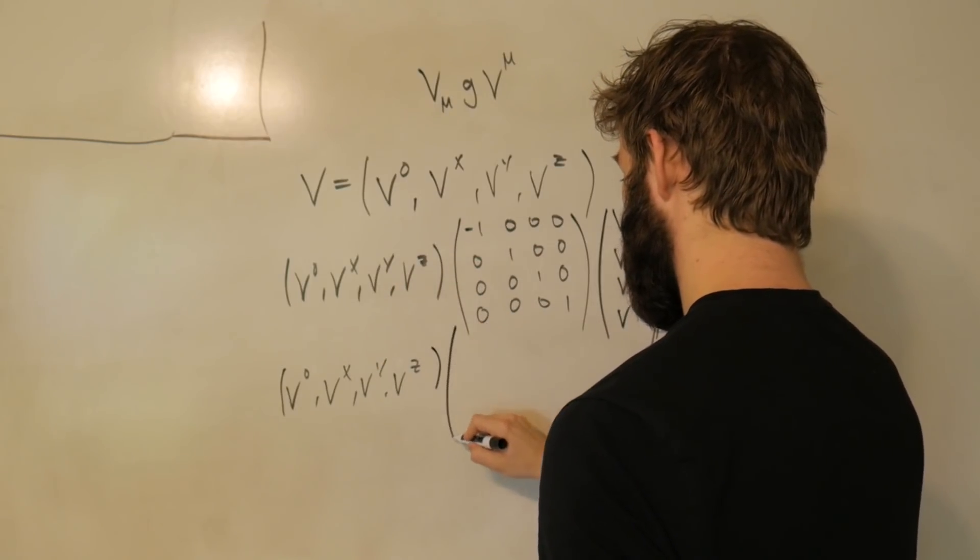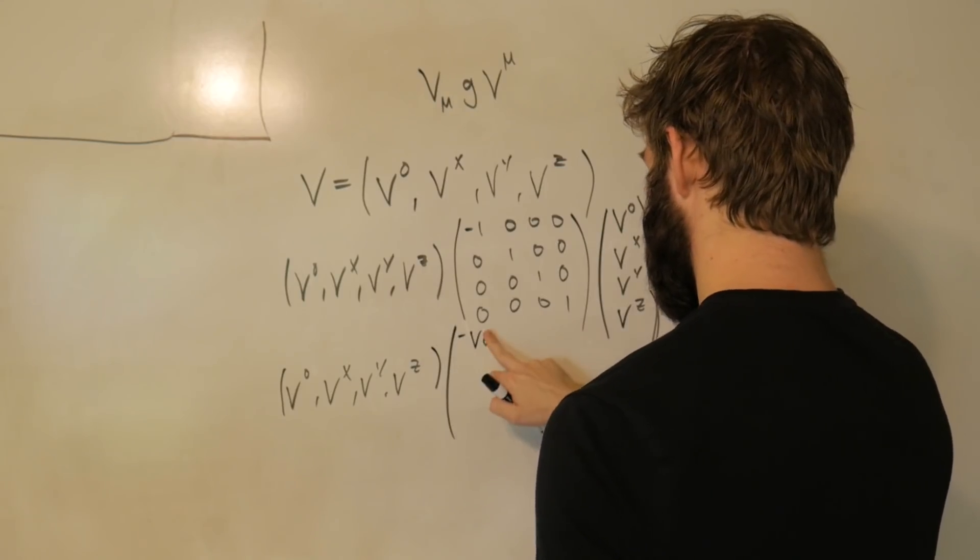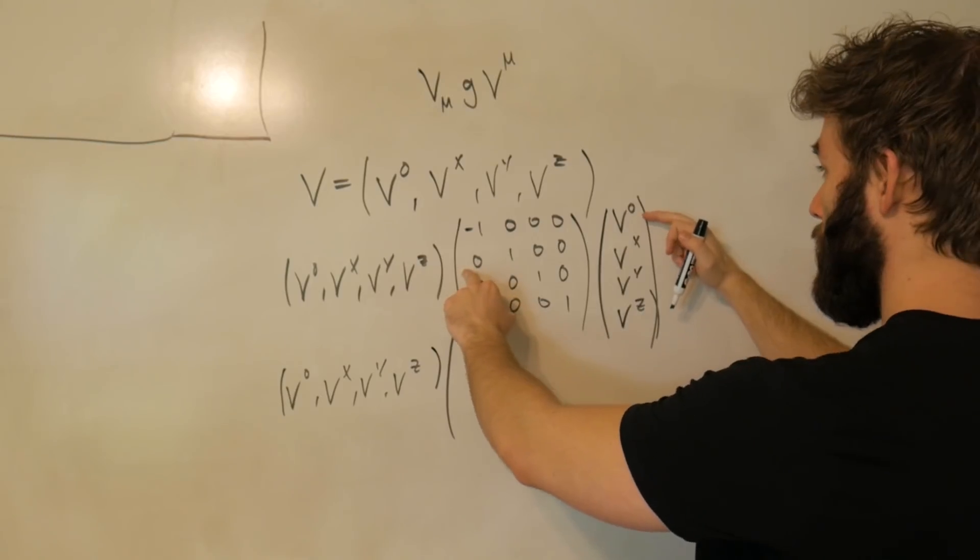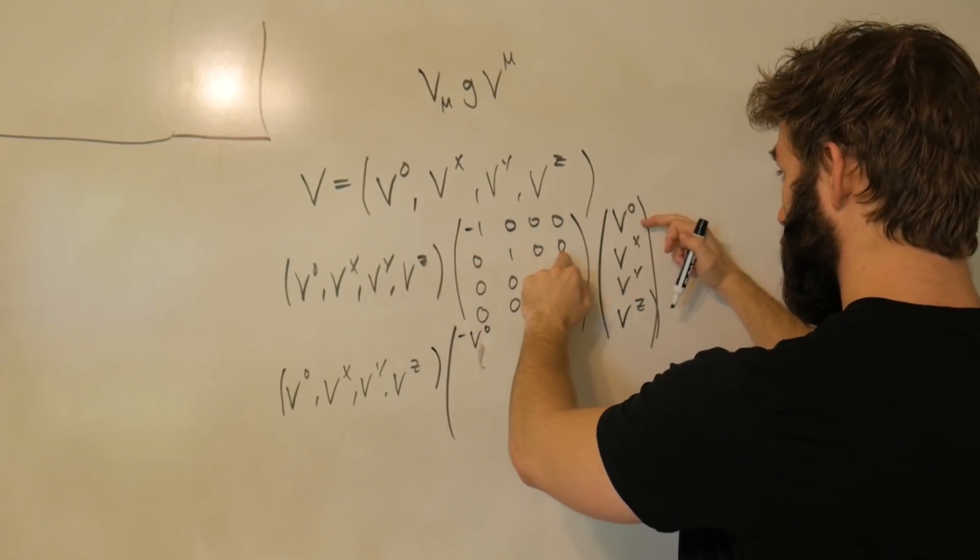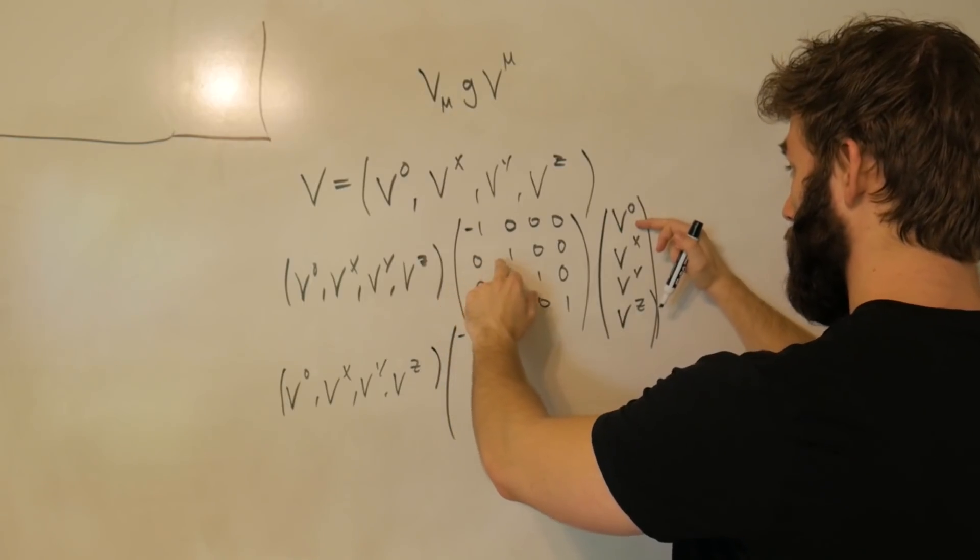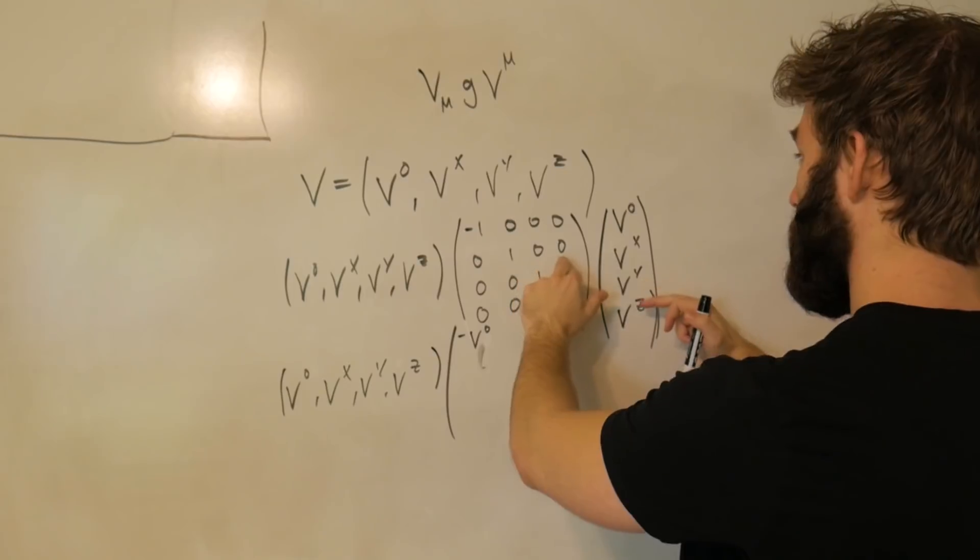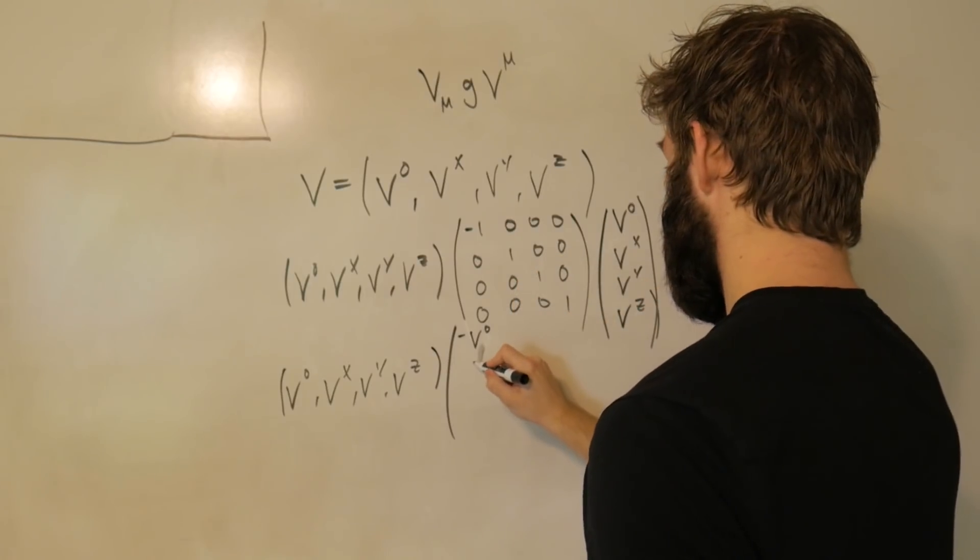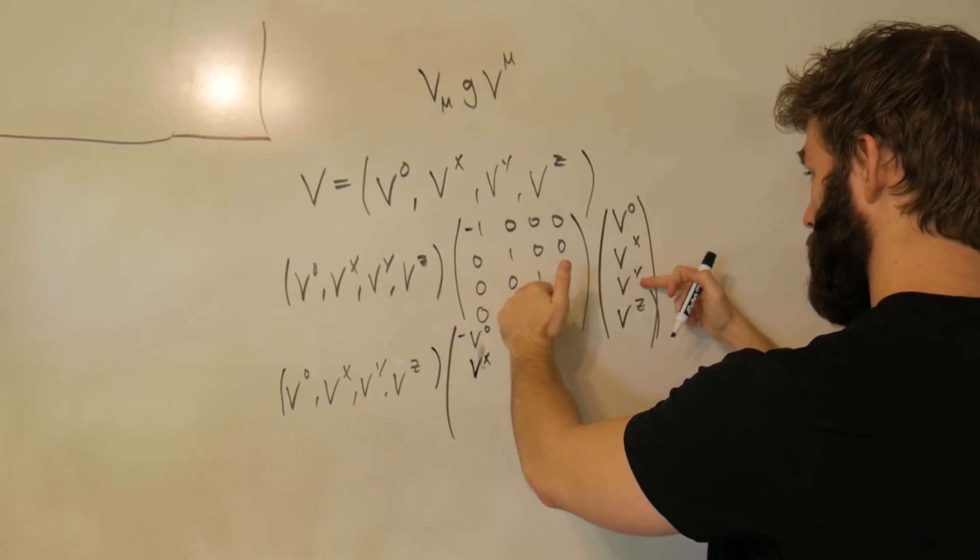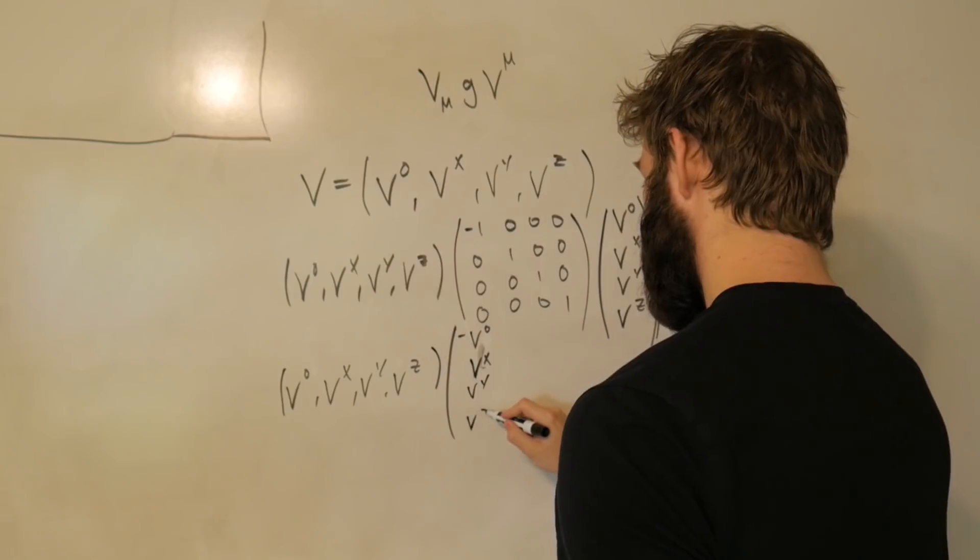So here, we have a minus v₀. Same thing. We're going to go down a row. That's going to be across and then down. So here, zero v₀, plus one vˣ, plus zero vʸ, plus zero vᶻ. It's just going to give us vˣ. Same thing. We're going to go down a row. It's just going to give us a factor of vʸ and vᶻ.